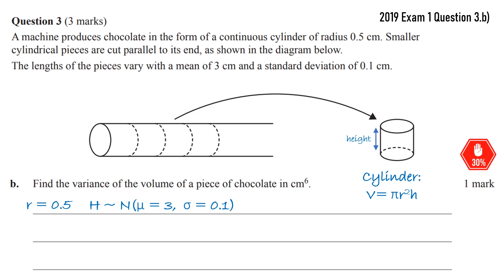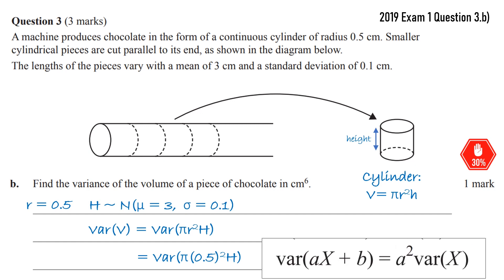Once we know that, we're trying to find the variance of the volume which is pi r squared h. R is 0.5 so we can plug that straight in. And now what we have is actually a constant times the height. Pi times 0.5 squared is some constant. So we're going to need this formula for variance of ax plus b.